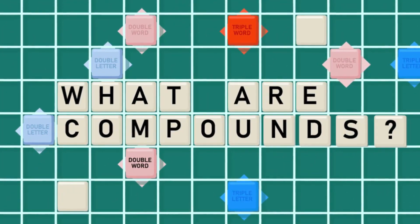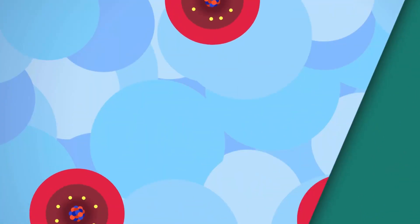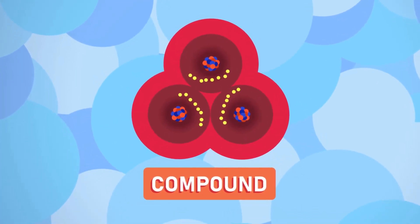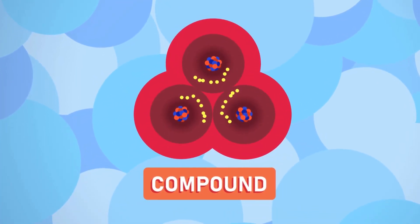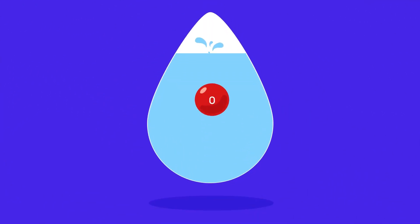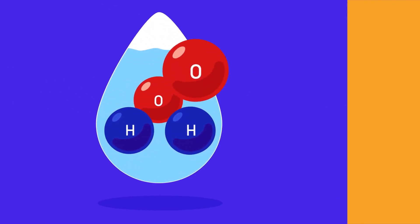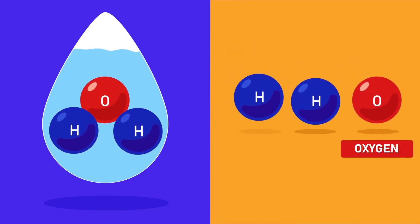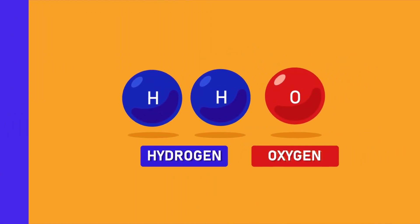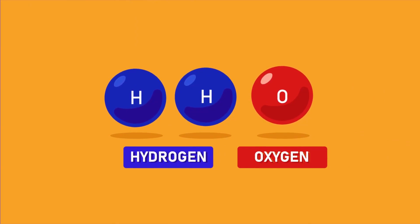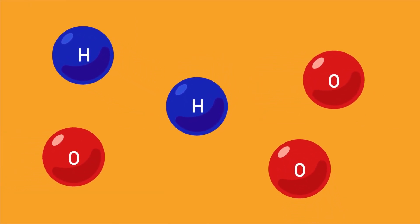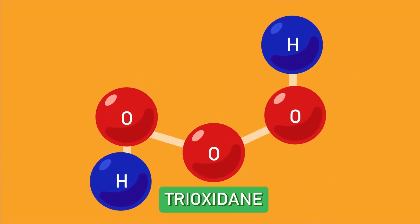What are compounds? Remember how molecules are two or more atoms that combine together? Compounds are also a molecule, but those elements must be different. For example, water is a compound. It is made by chemically joining an oxygen atom with two hydrogen atoms. The ratio of hydrogen atoms to oxygen atoms in water is two to one. Changing this ratio will give us a different compound.